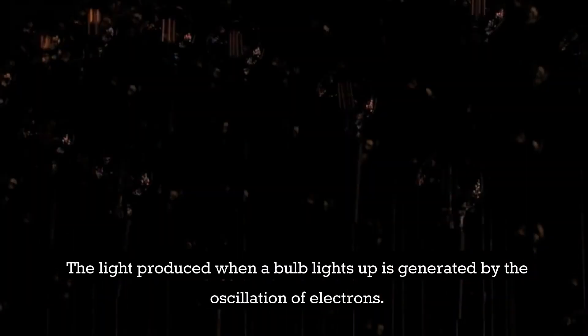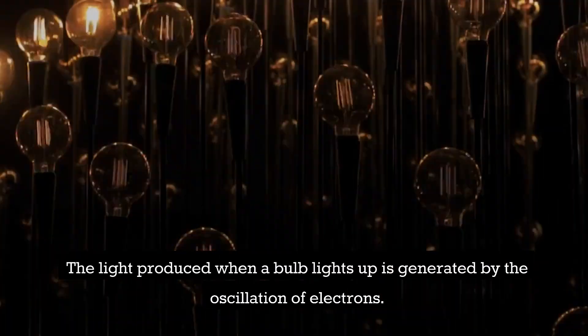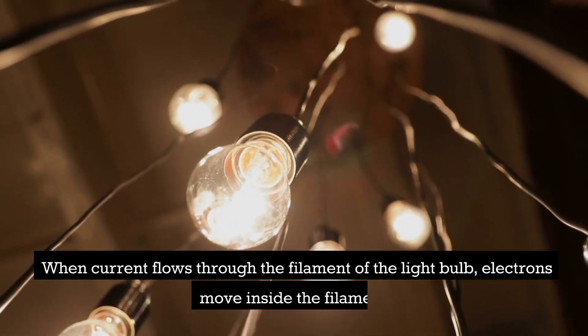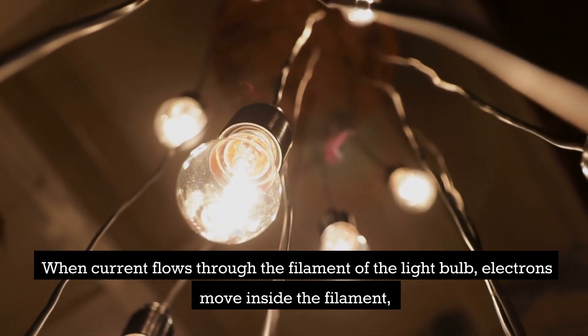The light produced when a bulb lights up is generated by the oscillation of electrons. When current flows through the filament of the light bulb, electrons move inside the filament.